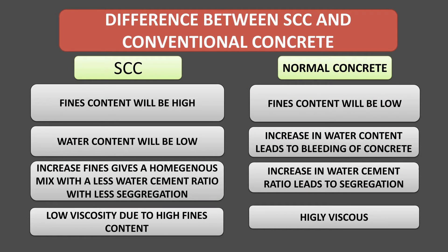What are the main differences between SCC and conventional concrete? In SCC, the fines content is very high, whereas in normal concrete the fines content is comparatively low. In SCC, the water content is very low, and flowability is achieved through superplasticizers and viscosity modifying agents. In normal concrete, increasing the water-cement ratio causes bleeding. In SCC, increased fines give a homogenous mix with a lower water-cement ratio and less segregation.